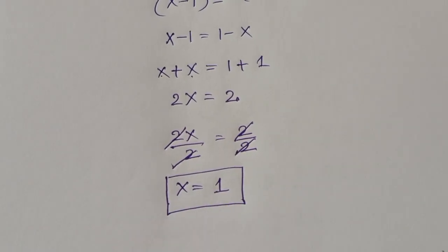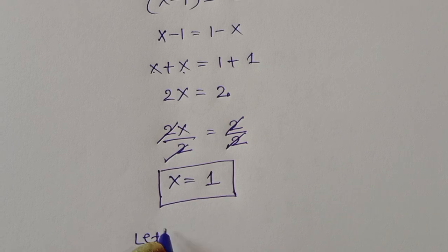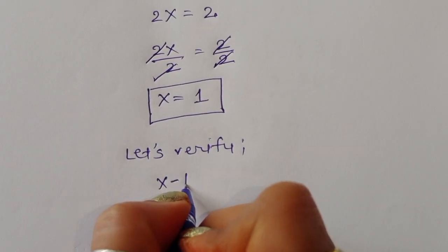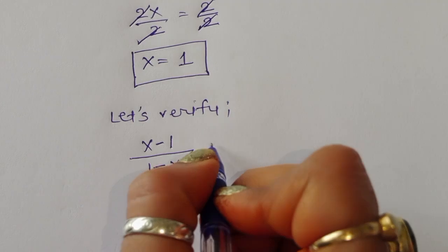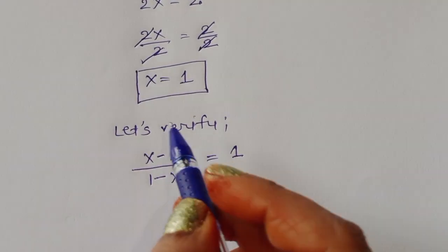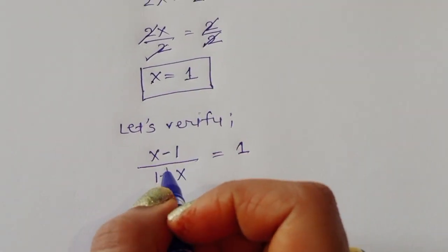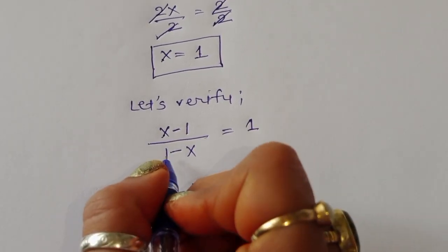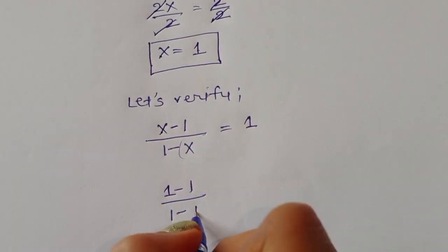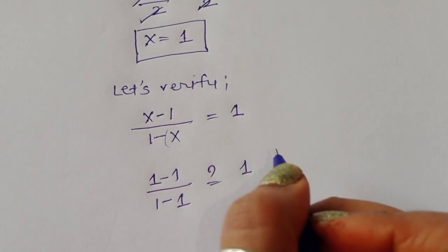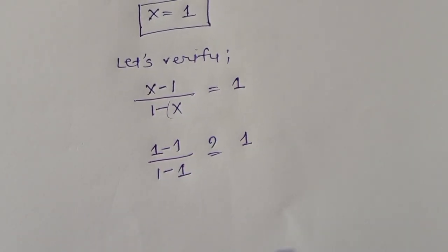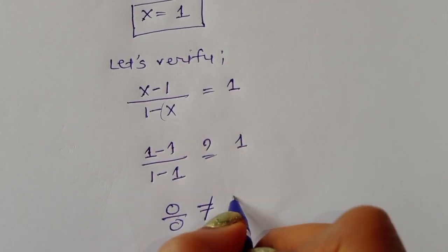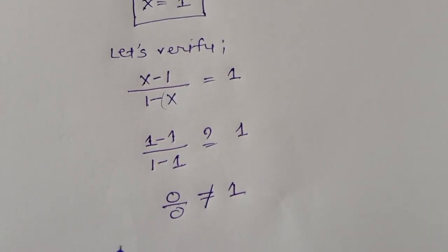We got x is equal to 1. Now let's verify if this is correct. Substituting x = 1 back into the original equation: (1 minus 1) divided by (1 minus 1) equals 0 divided by 0, which is not equal to 1. So this value is rejected.